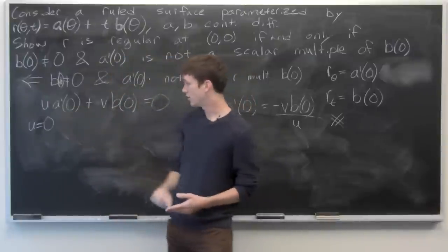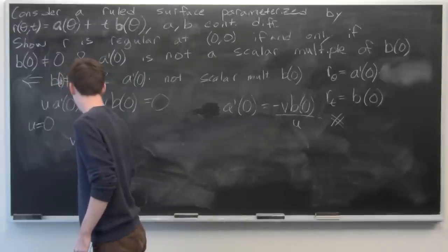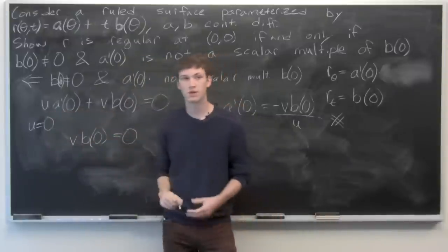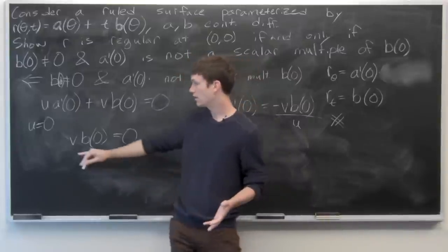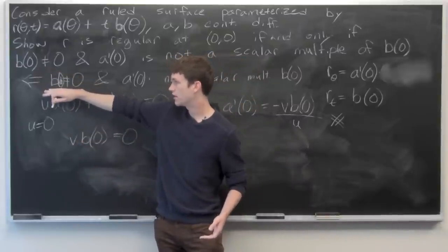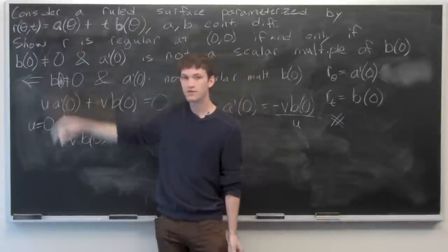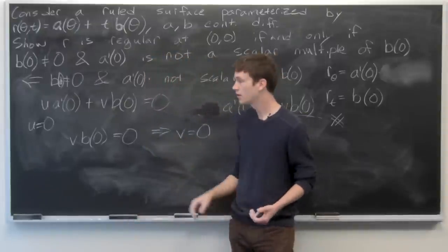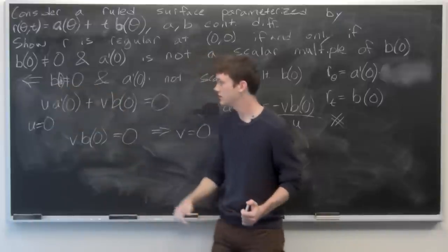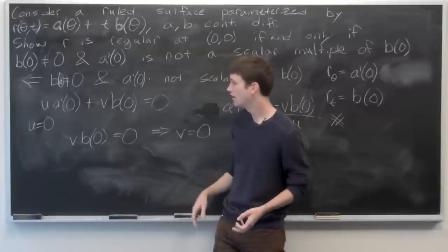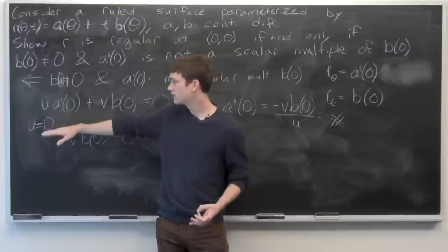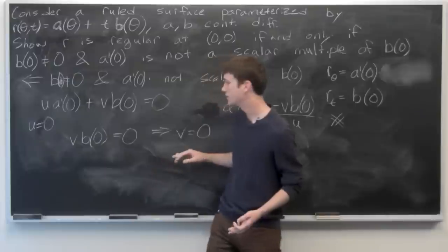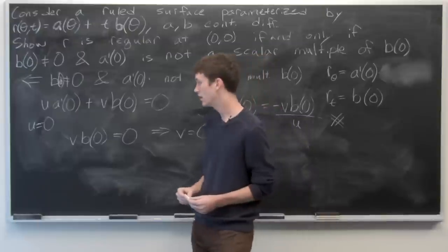Plugging u = 0 into the equation, the first term vanishes and we get v·b(0) = 0. Since b(0) ≠ 0, we conclude v = 0. So we've shown that given the two conditions, the only solution to the linear combination of partial derivatives equaling zero is u = v = 0, proving r is regular and completing the proof.